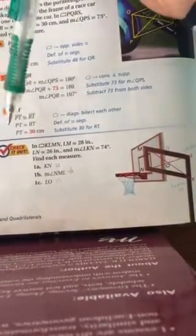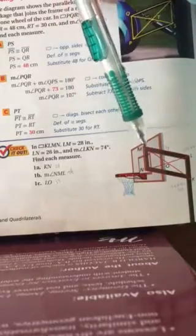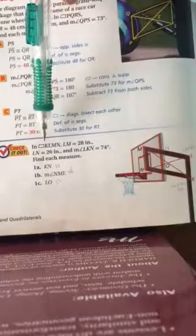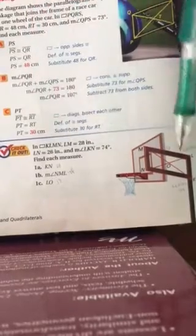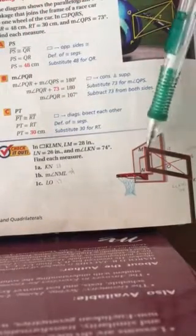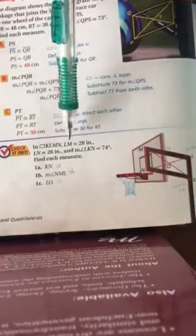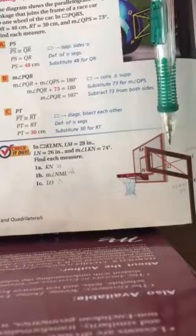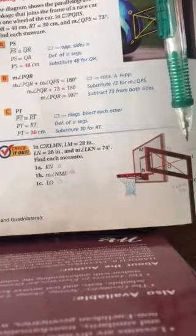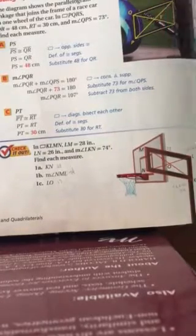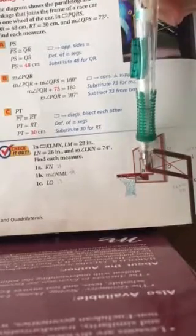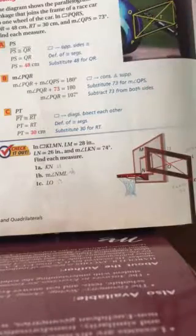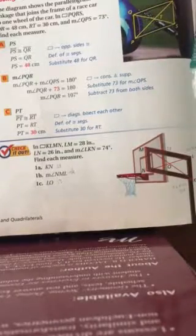We are looking at the diagram with the basketball goal. The question says in parallelogram KLMN, and we have that over here KLMN. LM equals 28 degrees and you can probably tell that I have lightly labeled that. LN equals 26 degrees. That is from here to the opposite corner. And angle LKN equals 74 degrees. Find each measure.